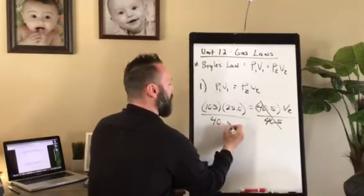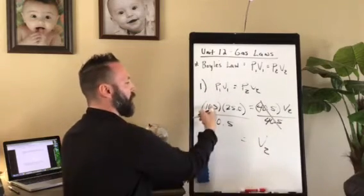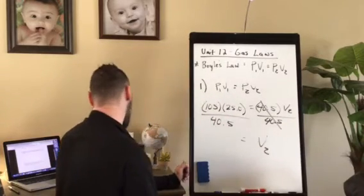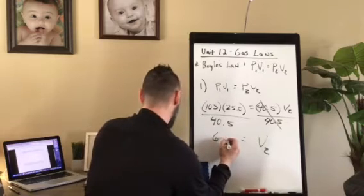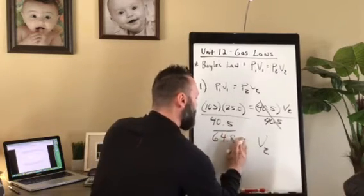Divide by 40.5. Our volume V2, 105 times 25 divided by 40.5 is going to be three sig figs, 64.8 liters.